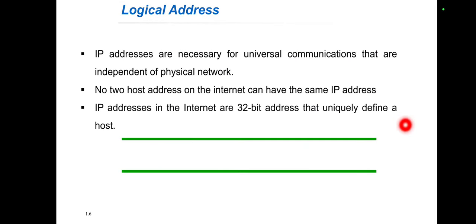Next is the logical address. Every machine requires an IP address, and that IP address is used for universal communication. It is totally independent of the physical network. No two host addresses on the internet can have the same IP address. The IP address is a 32-bit address uniquely defined for a host. While the physical address changes from hop to hop, the logical address usually remains the same.